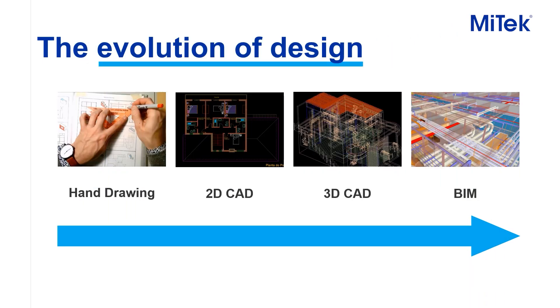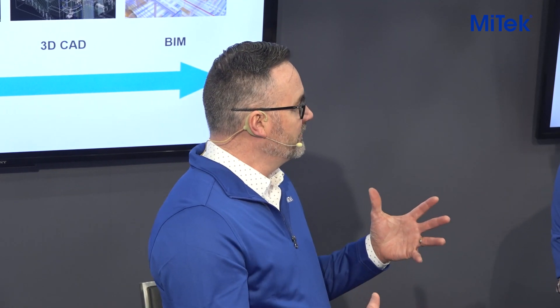We want to first talk about the evolution of design. When we think about design and what the design intent is, we really want to capture what we're trying to achieve as we build before it's actually built in the field. The way to convey that intent has taken different forms over many years. The first paper plans were done in 10,000 BC, and then that evolved over the years, but they couldn't copy plans very easily.